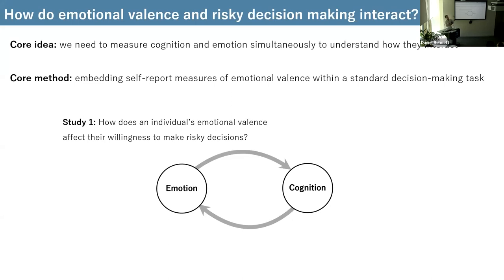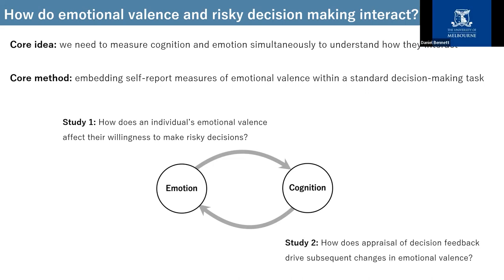This maps onto two specific research questions. Study one asks: given that we've measured somebody's emotional valence within this task, how predictive is that of the decisions they make — how does it affect their willingness to take risks? Study two asks: given that people receive feedback on the consequences of their decisions throughout the task, how do those outcomes drive the self-reported emotional states? So in theory, we can look at both arms of this reciprocal interaction.